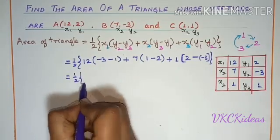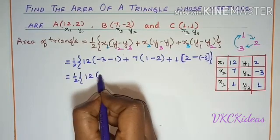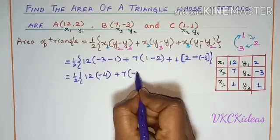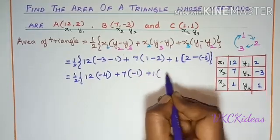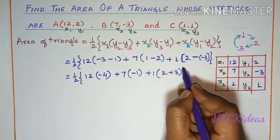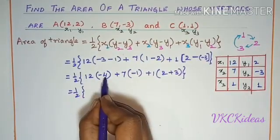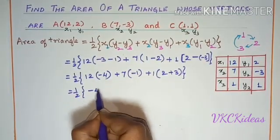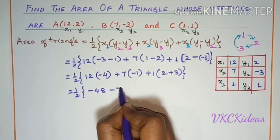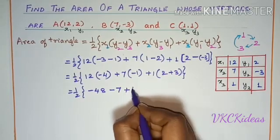Now, half into 12 into -3 and -1 put together, it will be -4, plus 7, 1 minus 2 is -1, plus 1 into 2 minus into minus plus 3. So half into 12 into -4 is -48, minus 7, plus 5.